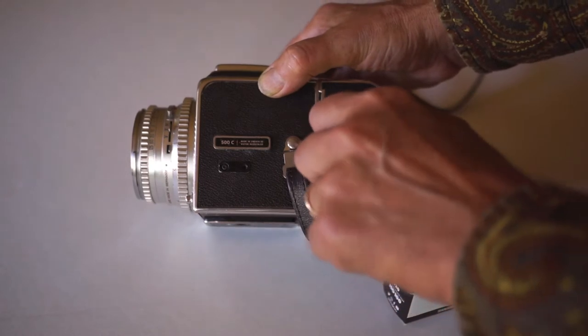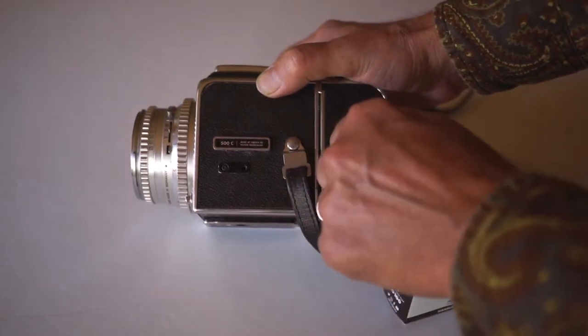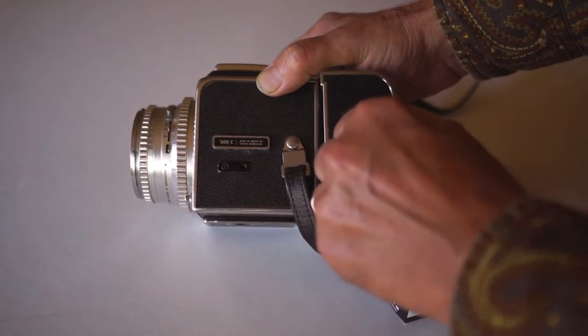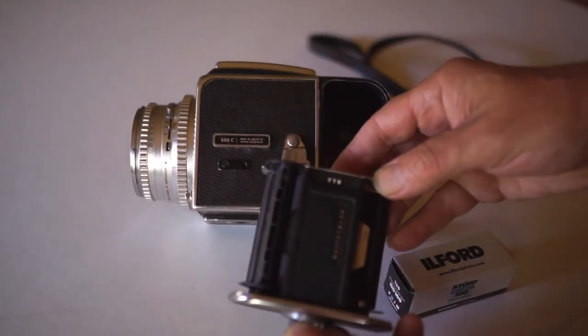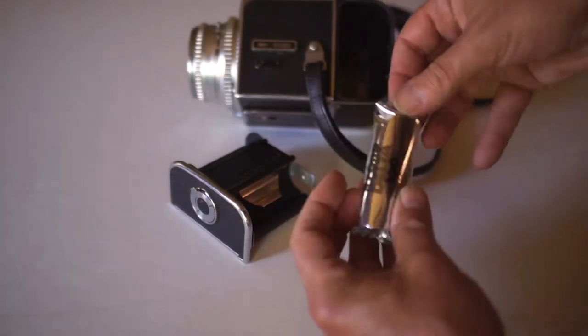To open it up, there's a key on the back. You flip up this, turn it counterclockwise, and then you can pull out the center part of the magazine. Take the film out of the box, out of the foil.